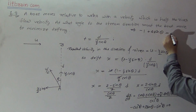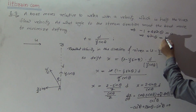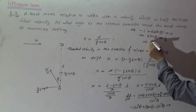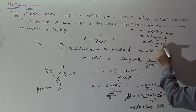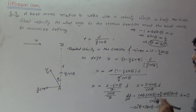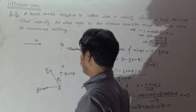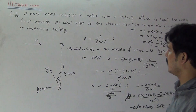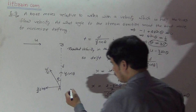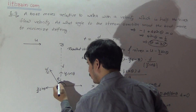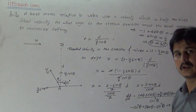Solving this equation gives sinθ = 1/2, which implies θ = 30°. So 30° from the direction AB is the angle at which the boat must move to minimize drifting. If we measure from the river flow direction, it will be 120° — that is, 120° from the direction of the river.